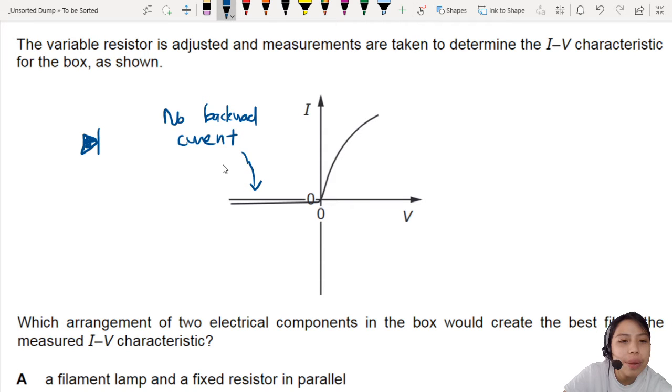So somewhere there should be a diode involved because the diode only allows current to flow in one direction, which is wherever that arrow is pointing. That's the first hint. Gotta have a diode inside there.